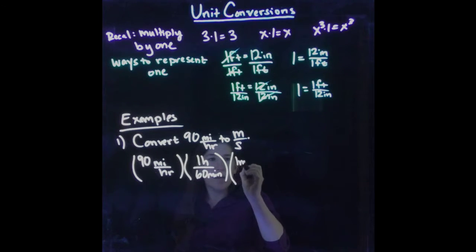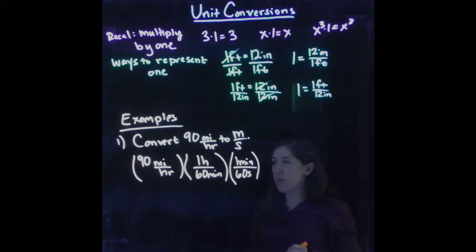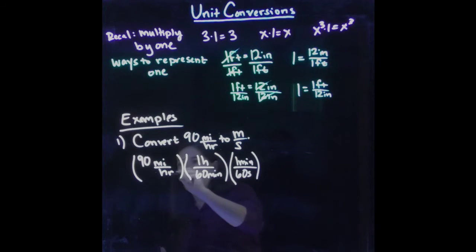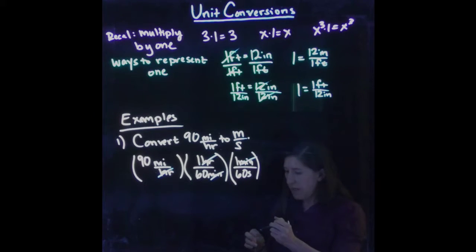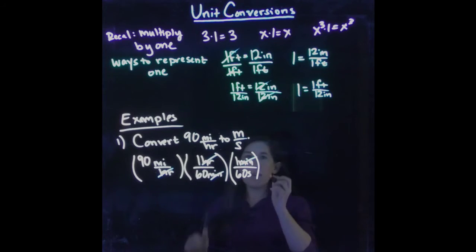But we know, happily, 1 minute is equal to 60 seconds. So this ratio is really just a representation of the number 1. So this is where we're doing pretty well. The hours will cancel with hours. The minute will cancel with minute. We'll end up with seconds on bottom, which is what we wanted.